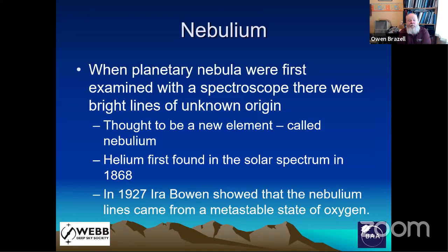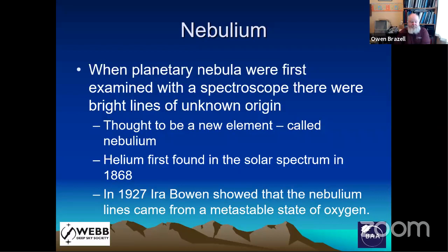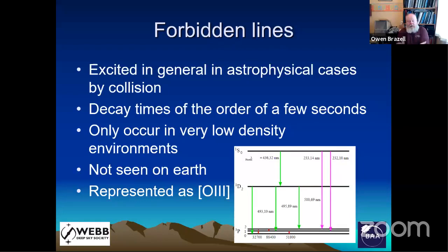So what was nebulium? When first examined they found bright lines of unknown origin and thought it was a new element, naming it nebulium because helium had first been found in the solar spectrum. However, in 1927, Ira Bowen showed that nebulium came from a particular state of doubly ionized oxygen. These became known as forbidden lines. In general in astrophysical cases they're excited by collision, not by radiation. The decay times are of the order of a few seconds rather than millionths of a second for normal lines, and because of that they only occur in very low density environments — environments not reproducible even with the best vacuums on Earth. Forbidden lines are represented by the element name with square brackets around it.